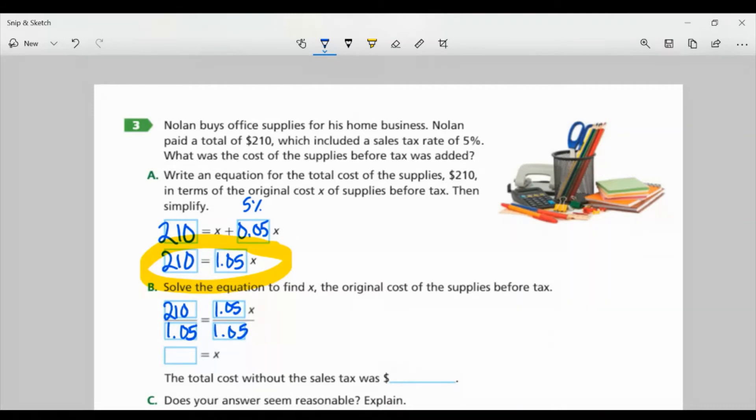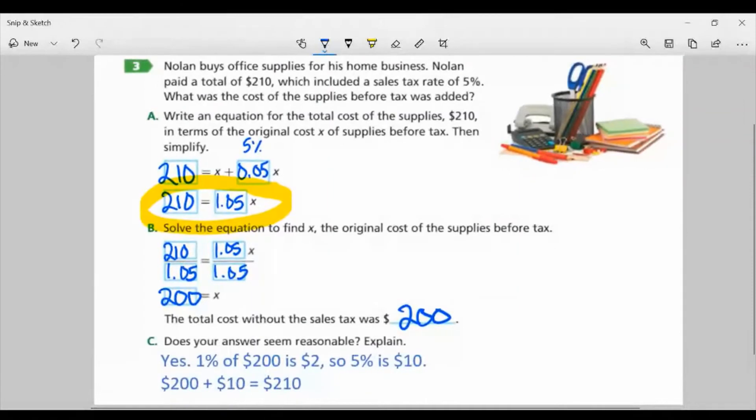When I divide 1.05 by 1.05, I get 1, or just 1X. On the left side, 210 divided by 1.05 would give me 200. So that means the total cost without the sales tax was $200. Now, part C: Does your answer seem reasonable? Yes, and it does seem reasonable because 1% of $200 is $2. So 5% would be $10, because that's 5 times 2 is 10. So if I add those together, $200 plus $10 is going to equal $210.